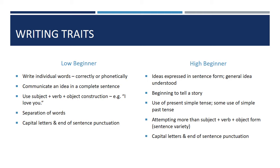Students should be able to communicate an idea in a complete sentence. Even if these sentences are simple and verb tenses are generally in the present, that's okay — they should still include an idea. Low beginners can also use basic subject, verb, and object construction. A classic example is 'I love you' — three words, but correct and including an idea. Students should be able to separate their words with spaces so they can be recognized by the reader. Low beginners can also use capital letters and end-of-sentence punctuation, generally a period, though even a low beginner can start to discern when a question mark or exclamation point might be used.